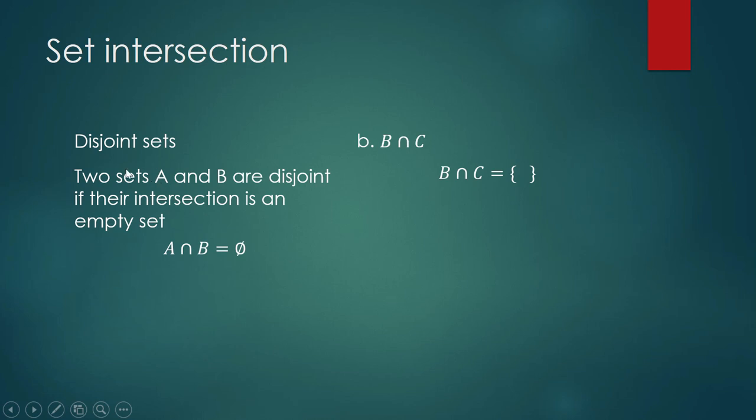One other example of disjoint sets would be you and your true love. You and your true love will never intersect. You will never meet each other. That is why you and your true love is an example of disjoint sets.